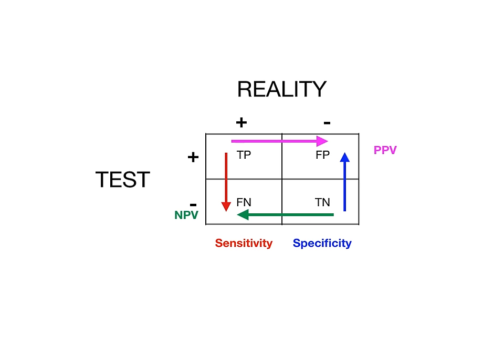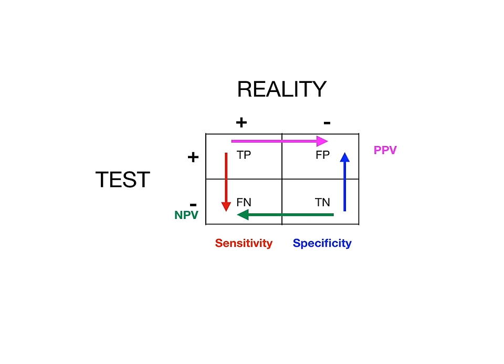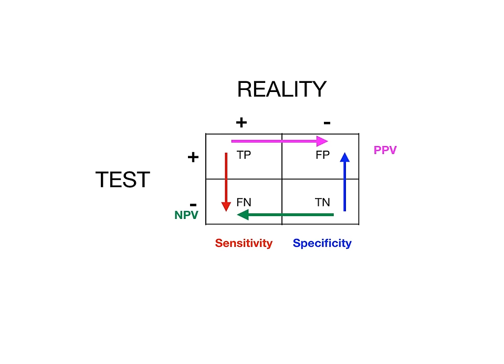Here is the summary. The mnemonics: positive predictive value moves in the positive direction; negative predictive value moves in the negative direction; being overly sensitive will bring you down in life; but being overly specific will take you up. That's the 4x4 table. Use the dirty USMLE 4x4 method. Look out for the next part of the biostatistics series coming soon.